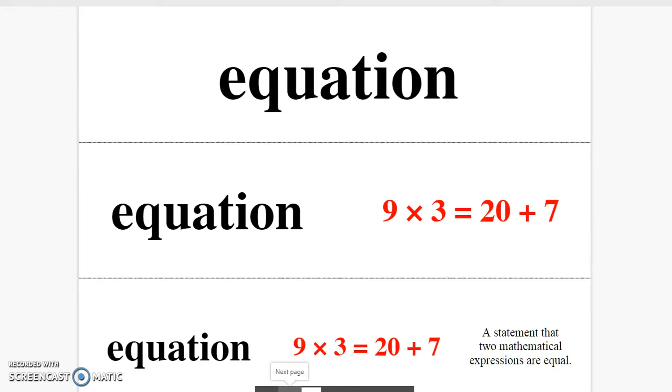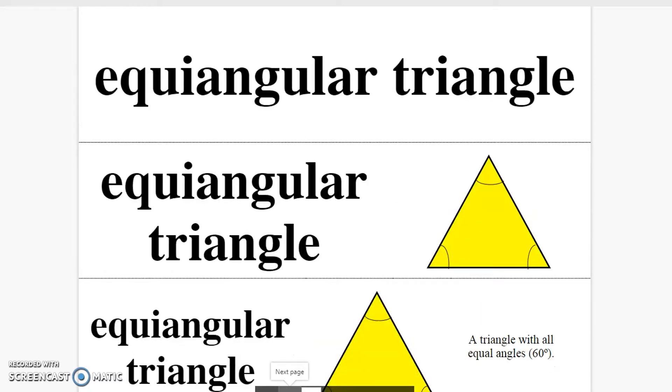Equation. A statement that two mathematical expressions are equal. Equiangular triangle. A triangle with all equal angles, which would be 60 degrees.